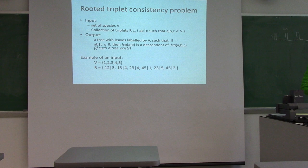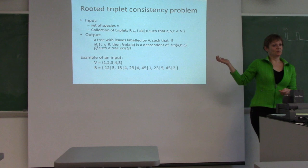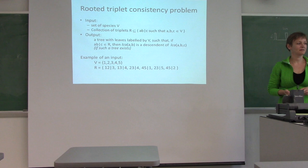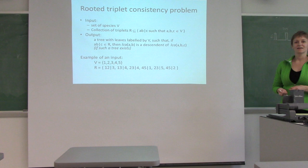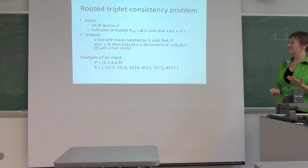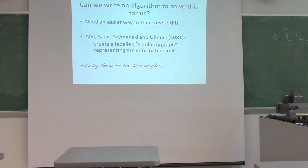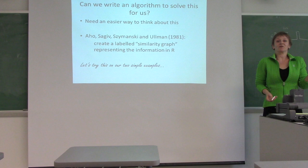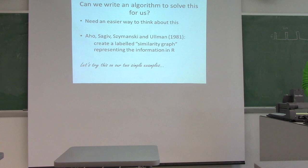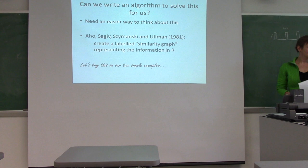Here's an example of an input. Could you decide whether there is a tree consistent with it? It's already becoming quite tricky, and what we'd really like is an algorithm. But before we can write an algorithm, we need an easier way to think about this. Researchers Ayo, Segev, Simansky, and Ullman in 1981 had a smart idea: represent it as a similarity graph.